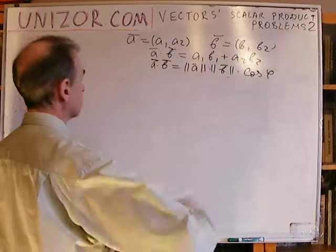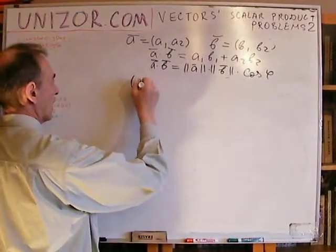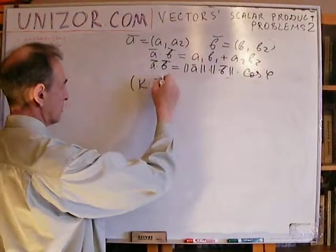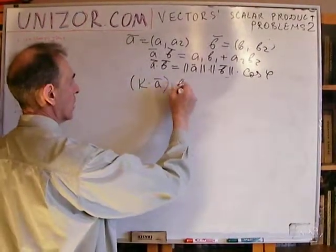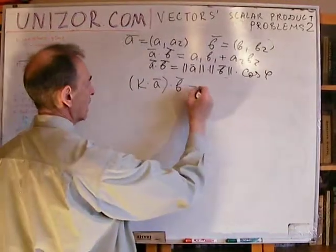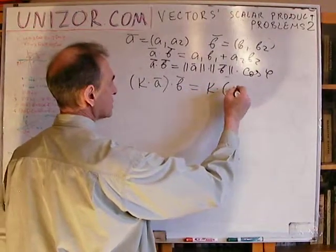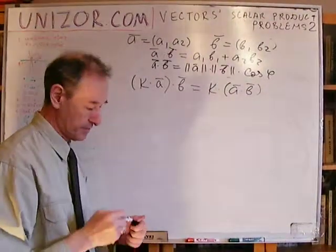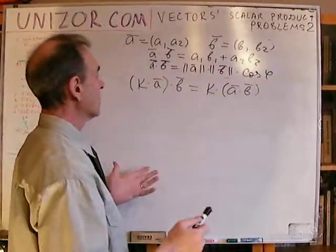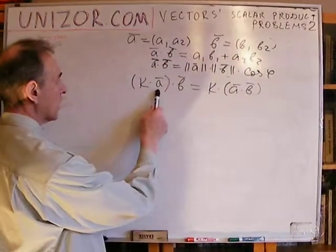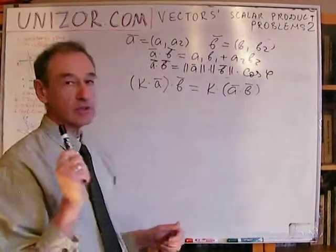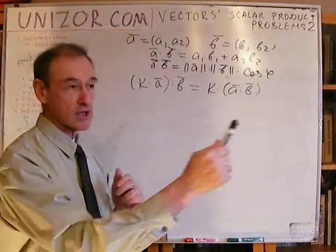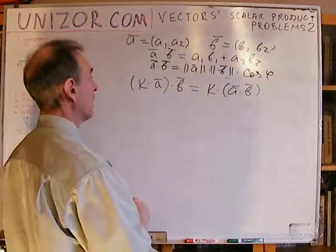Next is the associative law. I have to prove that if I multiply one of the vectors — which is a component of the scalar product — by a constant, it would be the same as multiplying that constant by the scalar product of the two vectors. That's very easy to see, because multiplication by a constant does not change the direction of the vector — it just makes it longer or shorter, stretching or shrinking. The length is the only thing which changes.